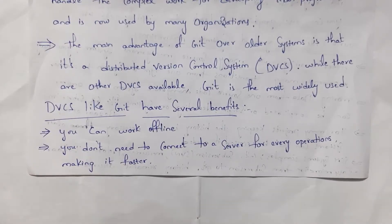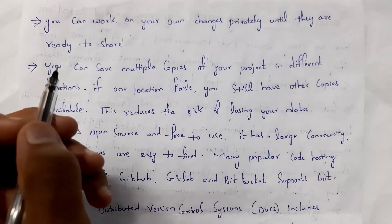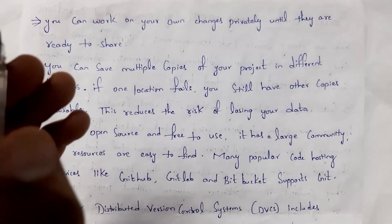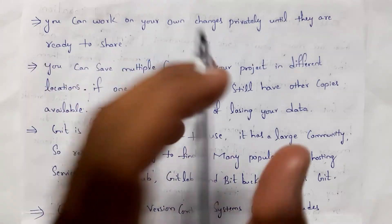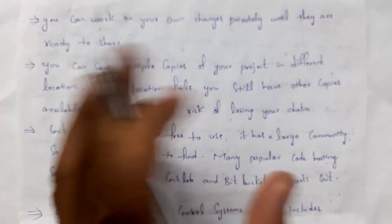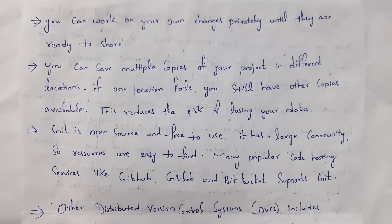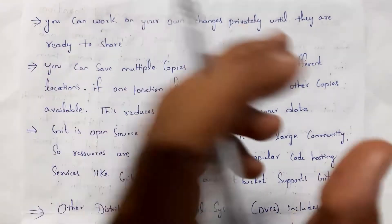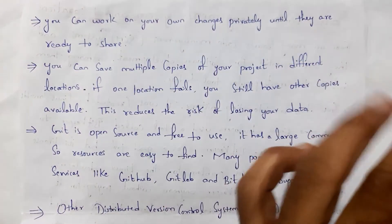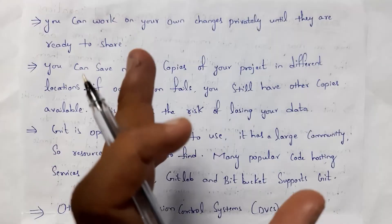Here are some benefits of Git. First, you can use Git offline — there is no need for internet or connecting to a server for each operation, so Git is very fast. Also, since Git is present on your own system, only you can access it; no others can access it, so all your files are secure and private.